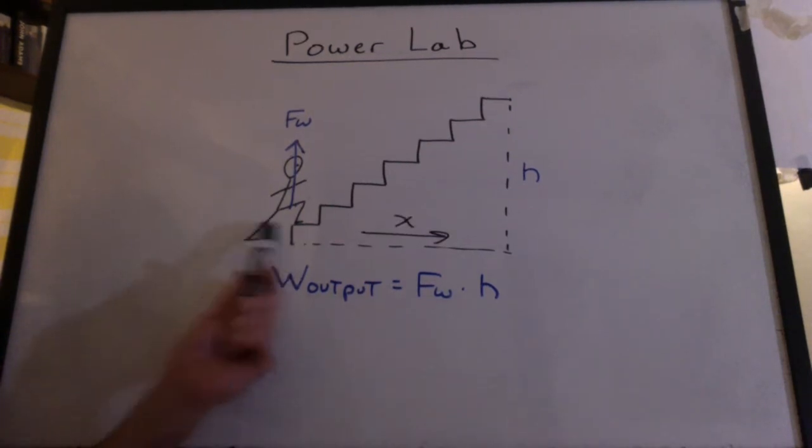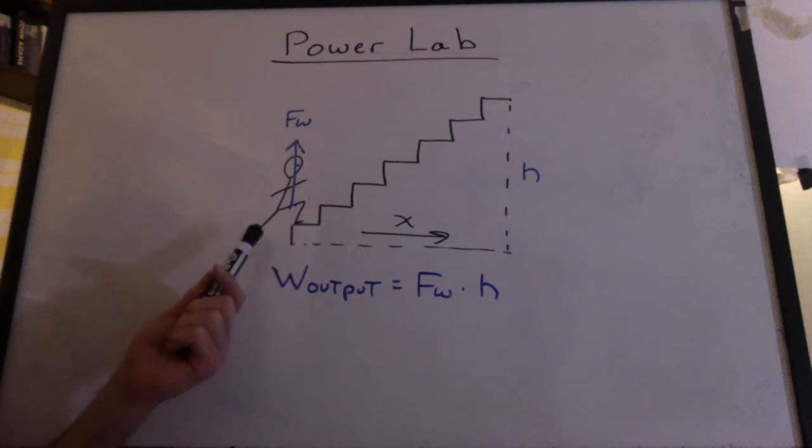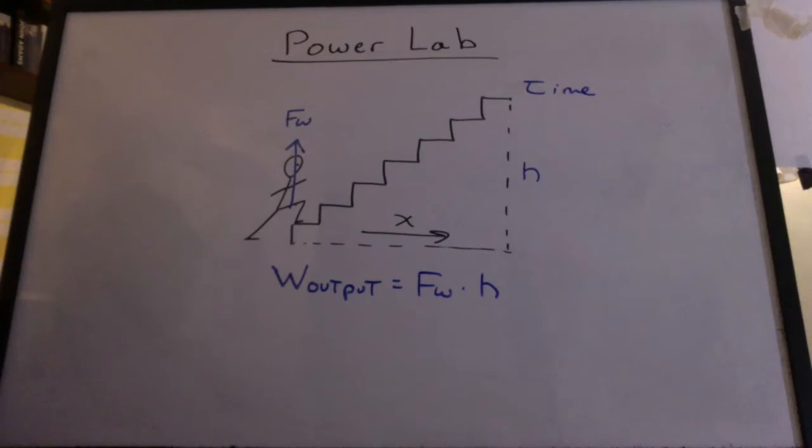We don't really worry about the x motion because gravity is pulling down. That's what you're fighting. The only forces you're fighting going sideways are going to be internal resistance, air resistance. I mean, it's not going to be as much compared to the height going up. Now all you have to do is measure the time to run up the stairs, and you'll have your power output.